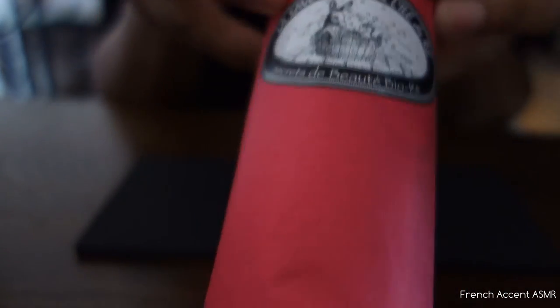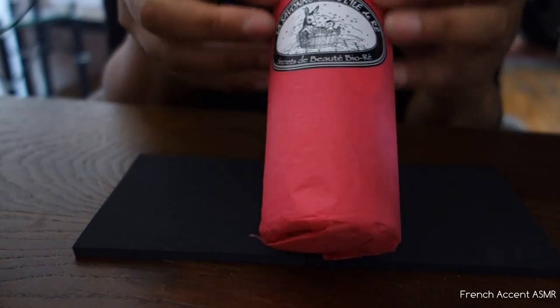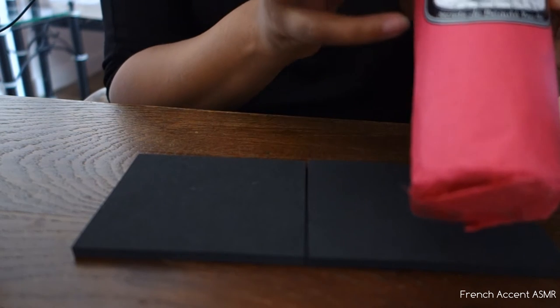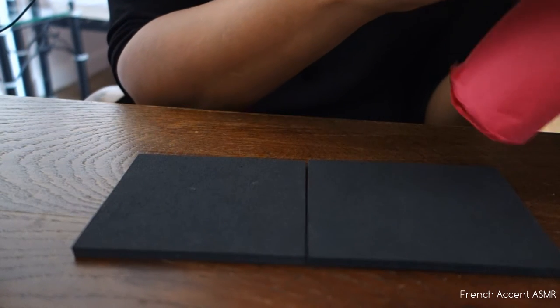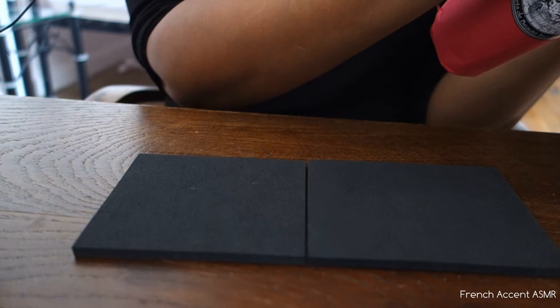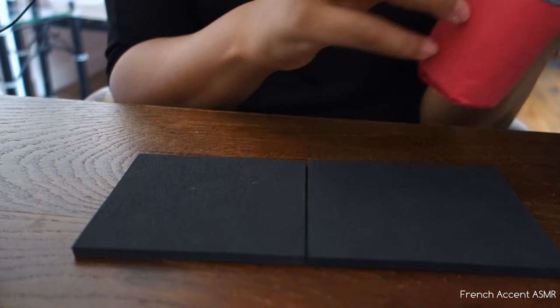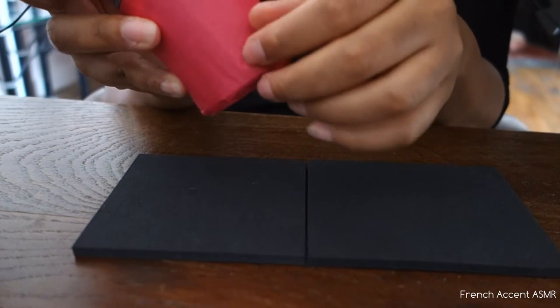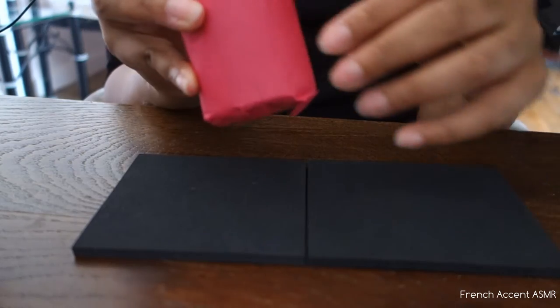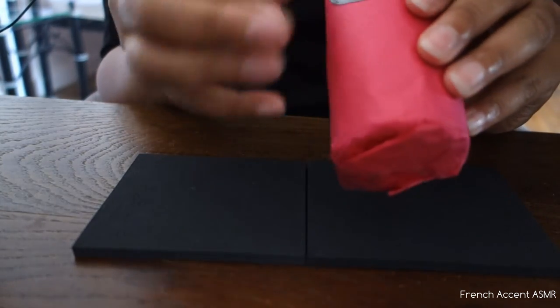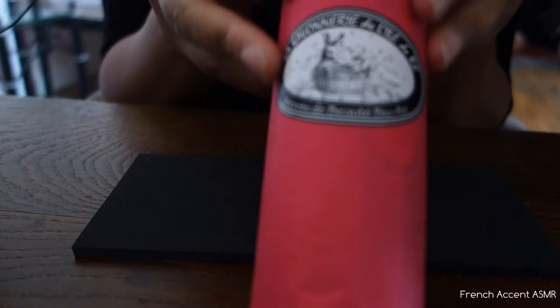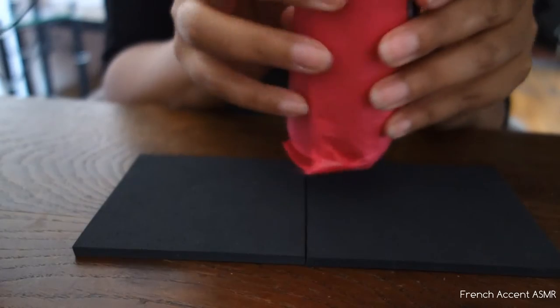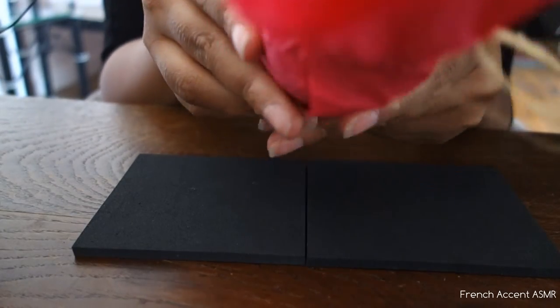They traveled to Ile d'Aix. It is an island, a very small island in west of France, not far from Brindey. And so they went to a little boutique and they got this. That's what she told me. I'm going to open it now.